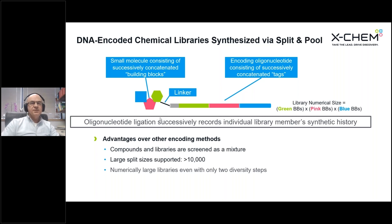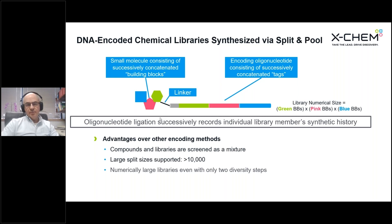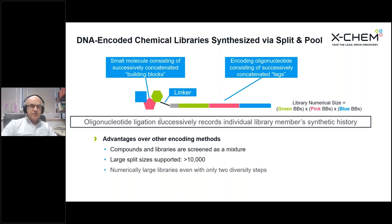Because of the way that these libraries are synthesized, there's an encoding relationship established between the tags — green, red, and blue — shown on the right-hand side. Each green tag encodes a unique building block at position one, the green building block; the same is true for the red and the blue. With a relatively small number of building blocks and a relatively efficient process, we can take 100 green, 100 red, and 100 blue building blocks, and by a process of split and pool, individual chemical reactions in individual wells, and individual encoding events with specific oligonucleotide tags, we can ultimately get out of those 300 building blocks a library of a million compounds — 100 by 100 by 100 — represented by a million unique oligonucleotide tag sequences, the concatenated tag sequences as shown on the right.